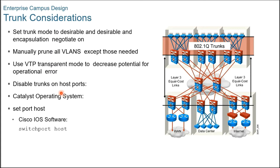Cisco recommends not using automatic VLAN pruning; manual pruning provides stricter control. As mentioned, campus-wide or access-layer-wide VLANs are no longer recommended, so VLAN pruning is less of an issue than it used to be. VTP transparent mode should be used as best practice because hierarchical networks have little need for a shared common VLAN database, and using VTP transparent mode decreases the potential for operational errors. Trunking should be disabled on ports to which hosts will be attached, so host devices do not need to negotiate trunk status. This speeds up the port process and is a security measure to prevent VLAN hopping.